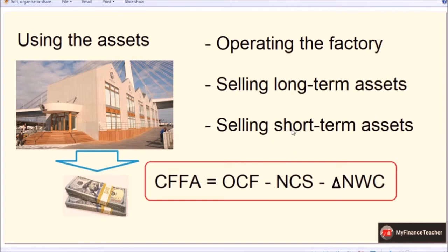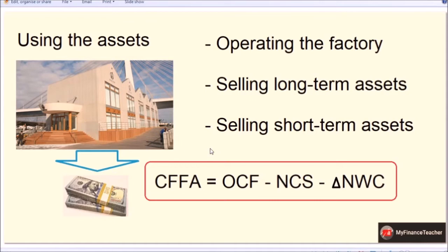Sales of short-term assets are taken into account by changes in net working capital — we covered net working capital in a recent video. If net working capital increases, the company has more short-term assets, which is the opposite of selling them to generate cash, so we place a negative sign here as well. This CFFA formula — OCF minus net capital spending minus changes in net working capital — is perhaps the one thing to take away from this video.